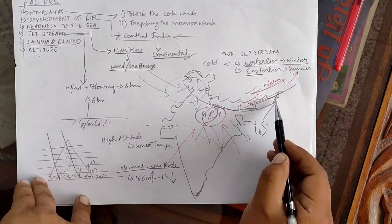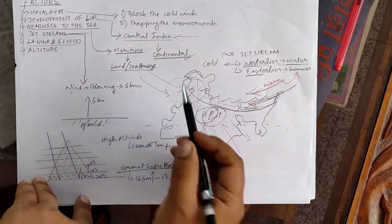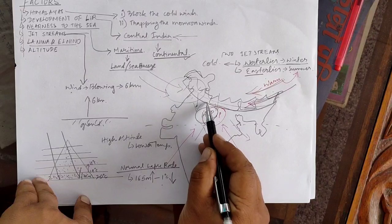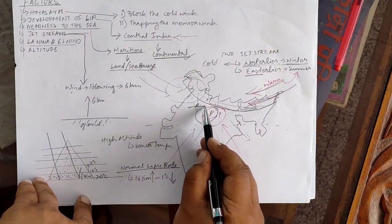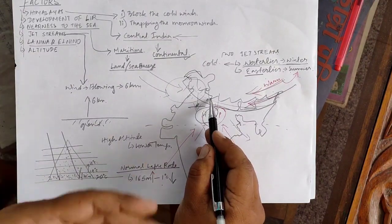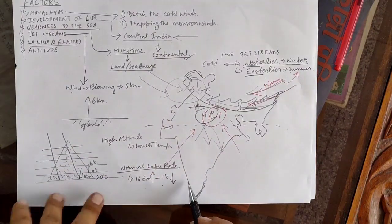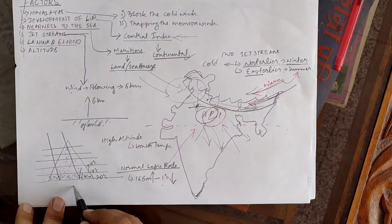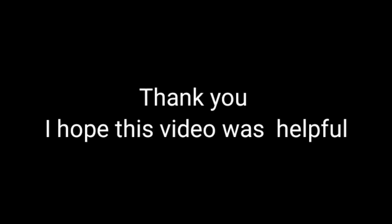Those are the factors which affect the climatic conditions of our country. That is also the reason why the Himalayas are much colder than the surrounding areas. For example, Delhi is much warmer because it is in the lower areas, whereas Shimla is at a higher altitude so it is much colder. With this we come to the end of the factors affecting the climate of our country.